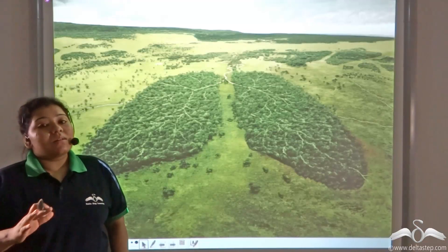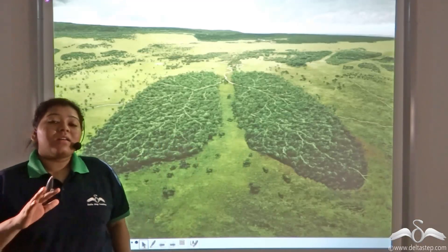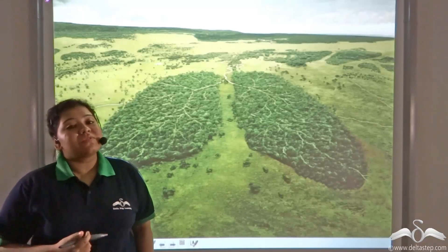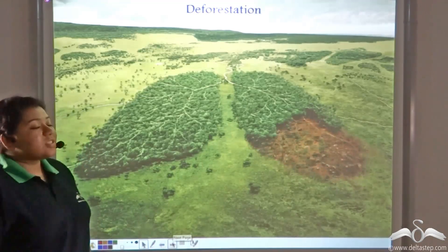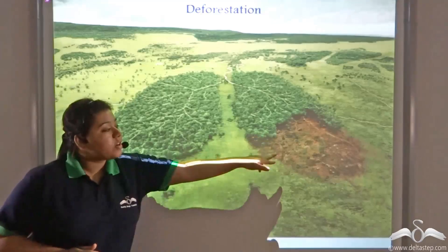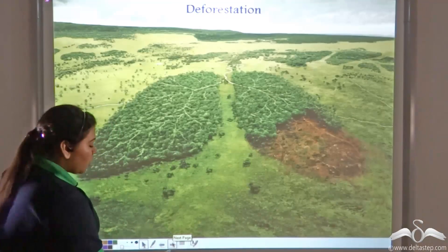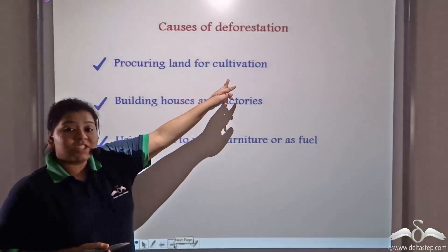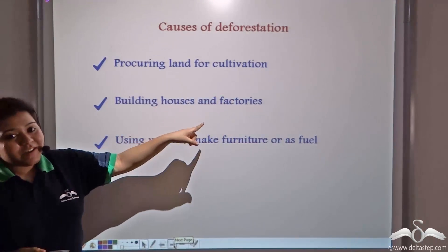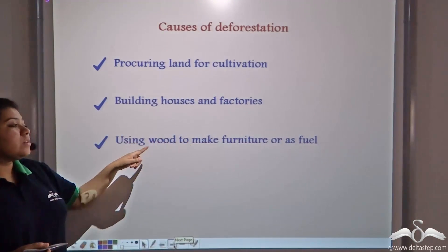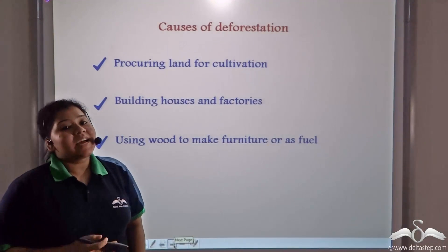The survivability of these organisms is at a threat because of deforestation. Deforestation is the clearing of forests and using this land for various purposes such as cultivation, building up of houses and factories, and using the wood to make furniture or use it as fuel.